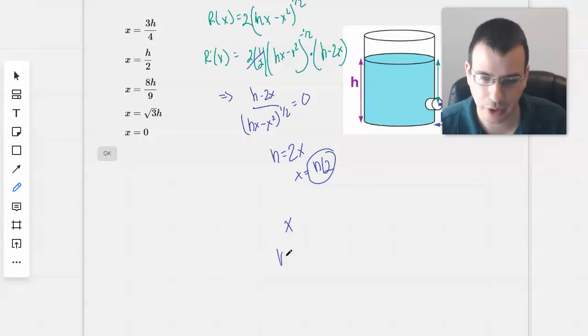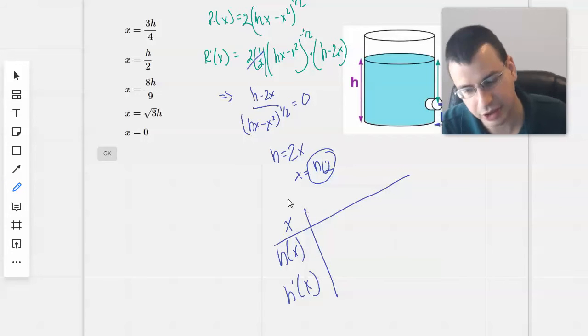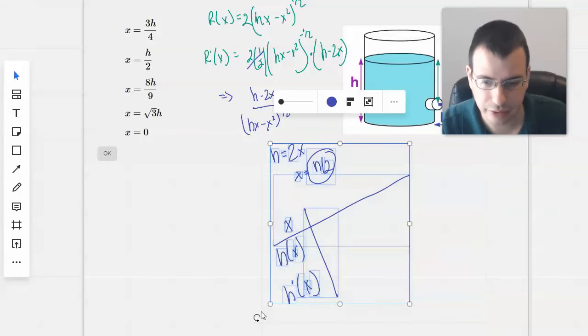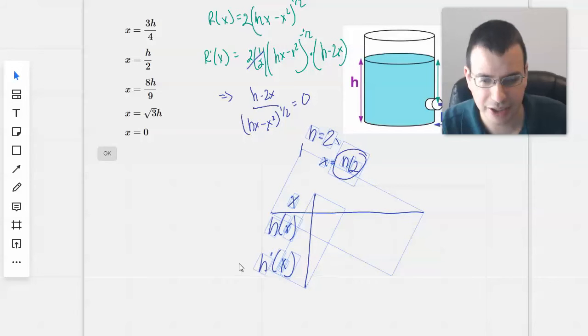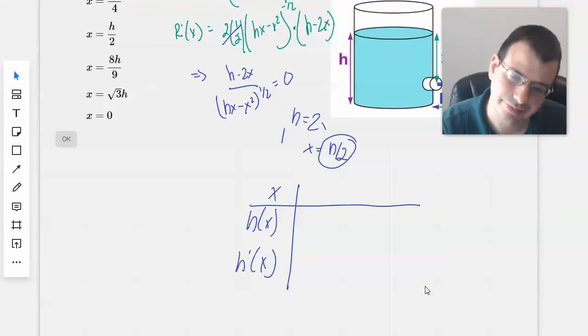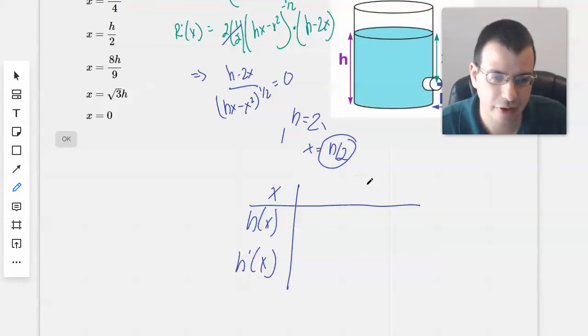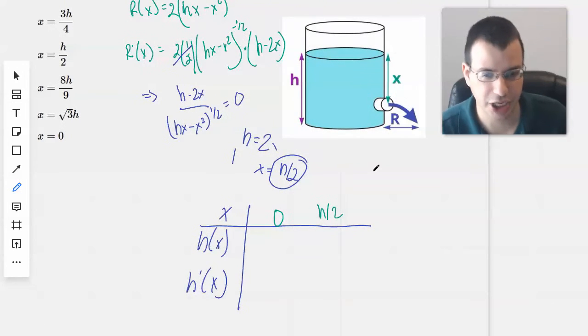Looking at this kind of the way we have before, we can look at values of x, values of h. And so we have h over 2. We have a maximum height of x equals 0, which basically means that h is at the top or h is at the very bottom.